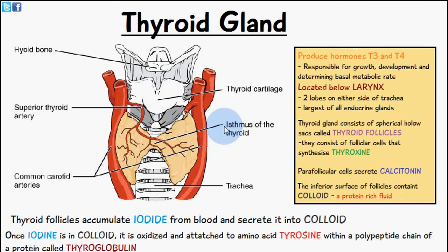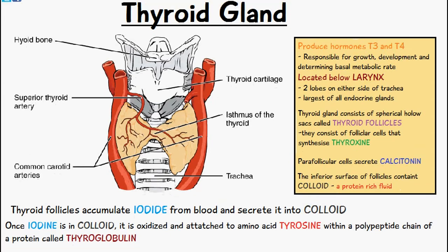Welcome to Five Minute School. In today's video we're going to be talking about the thyroid gland, which you can see in the diagram here. The thyroid gland produces hormones T3 and T4, which are responsible for growth, development, and determining the basal metabolic rate. It is located below the larynx and has two lobes on either side of the trachea, and it's the largest of all endocrine glands.